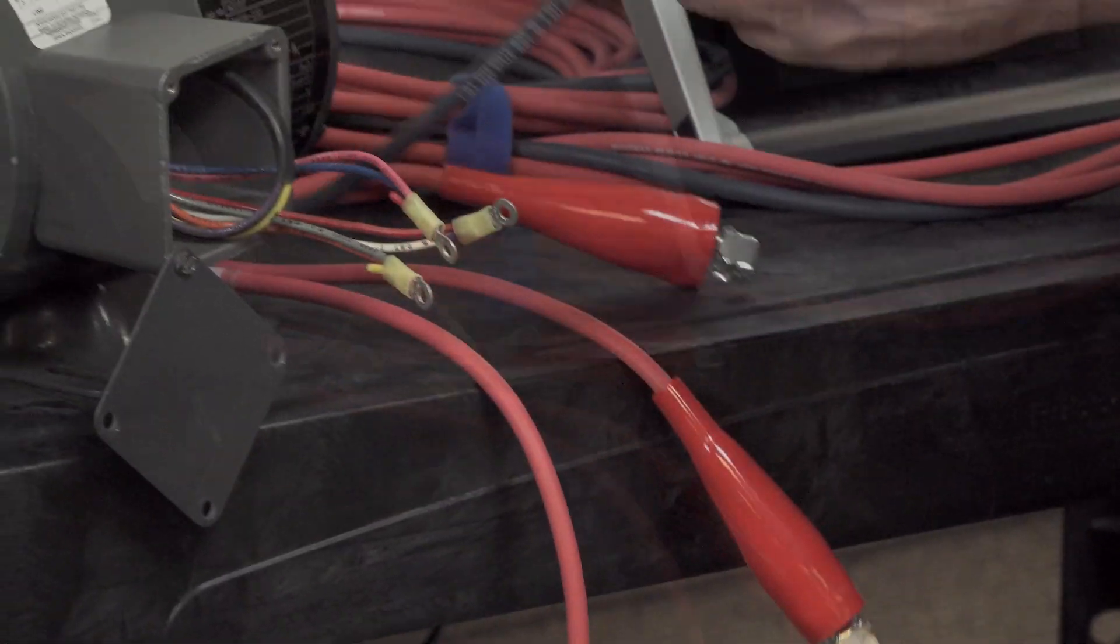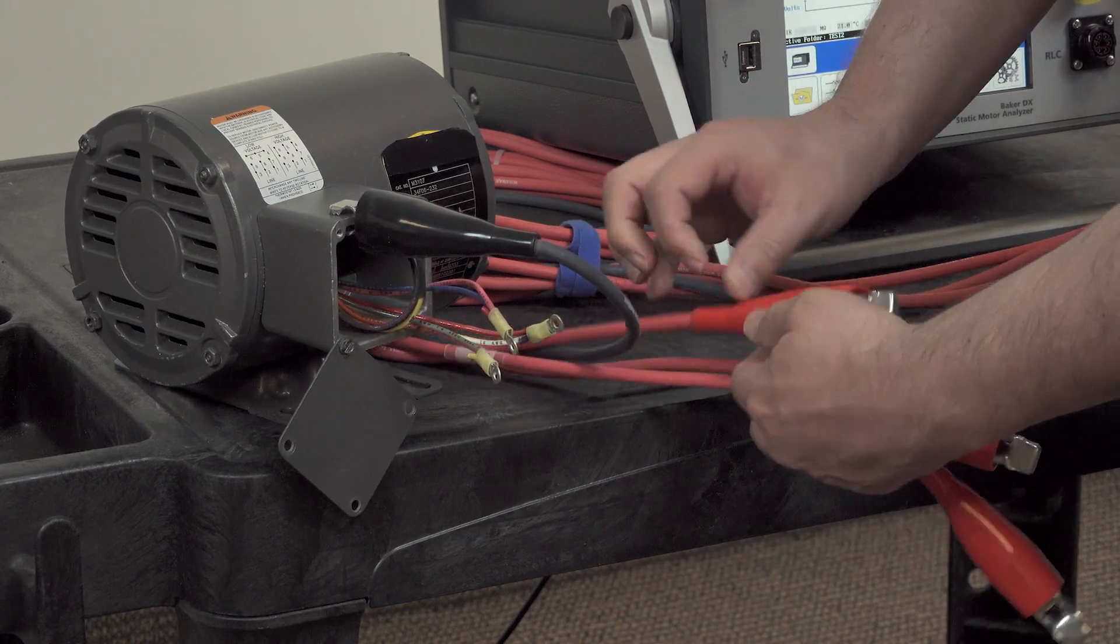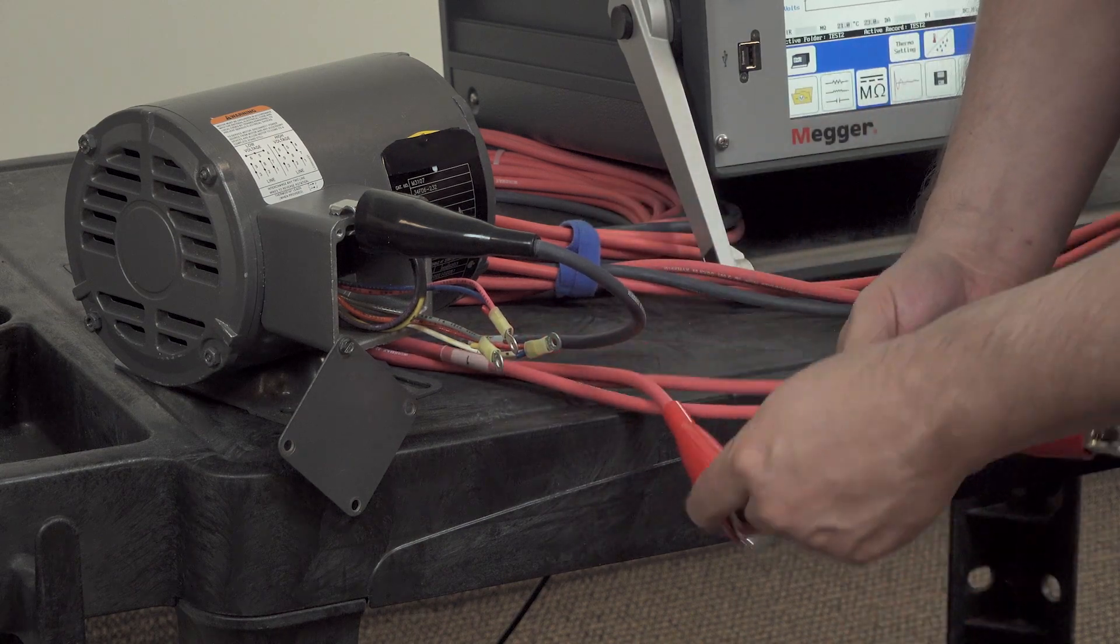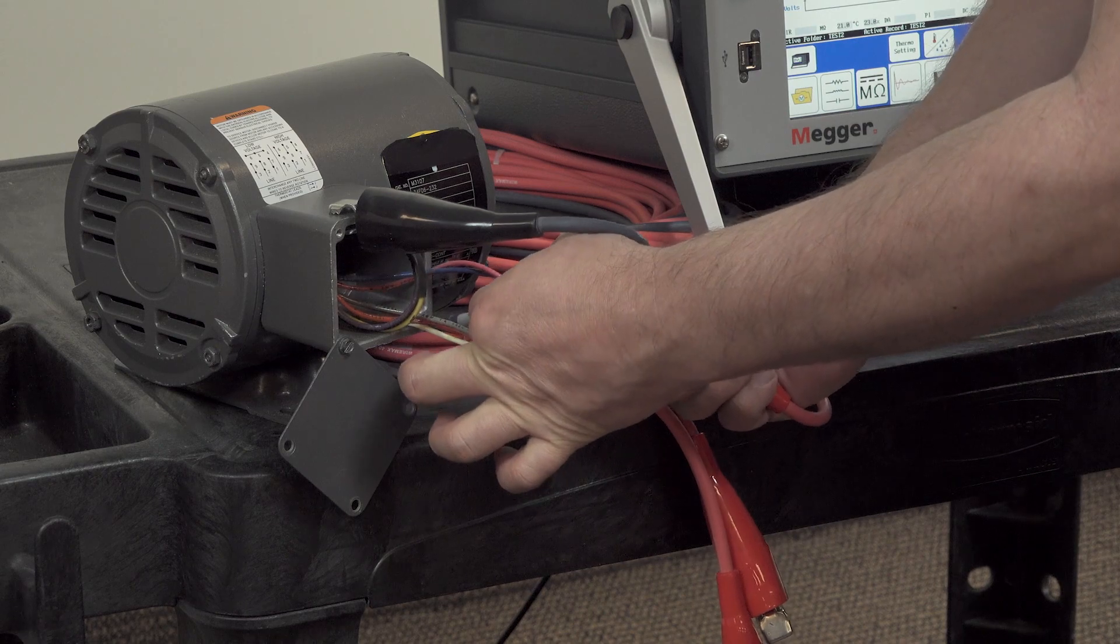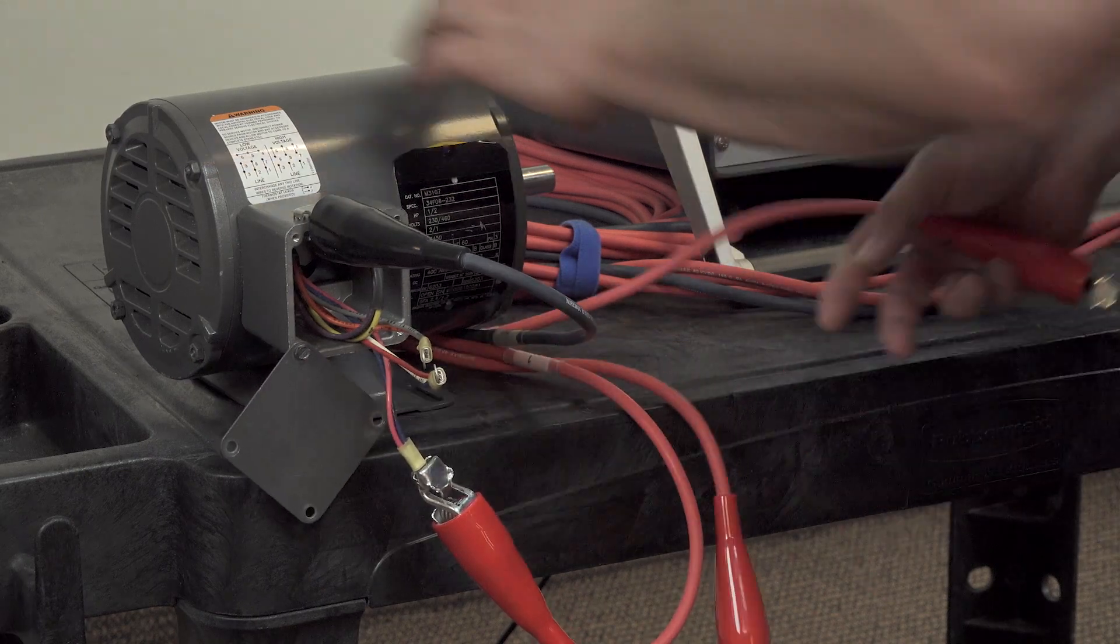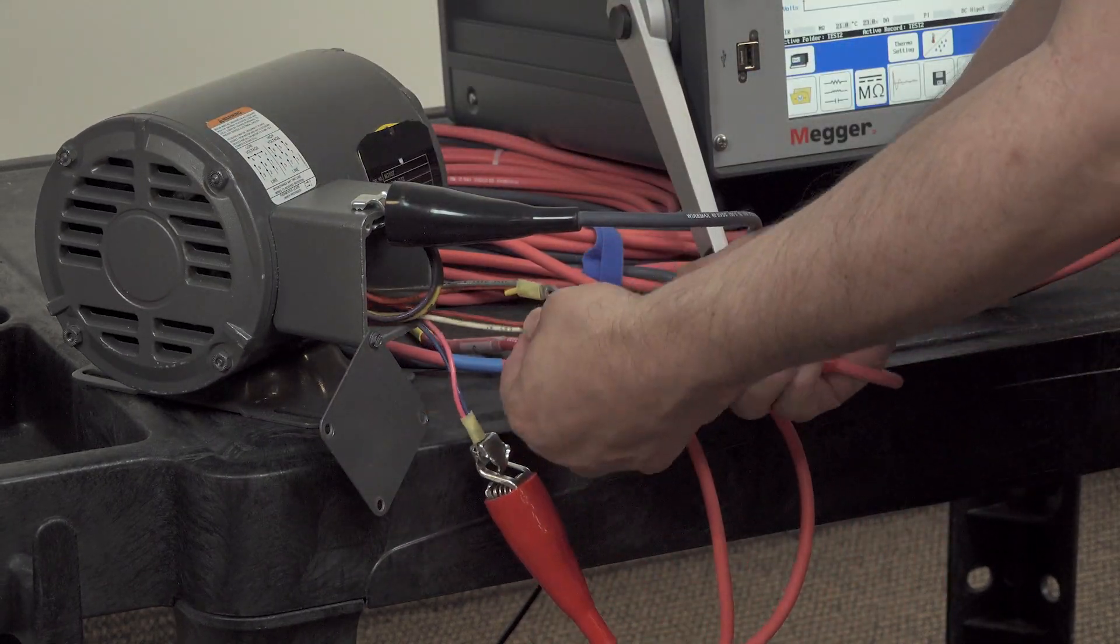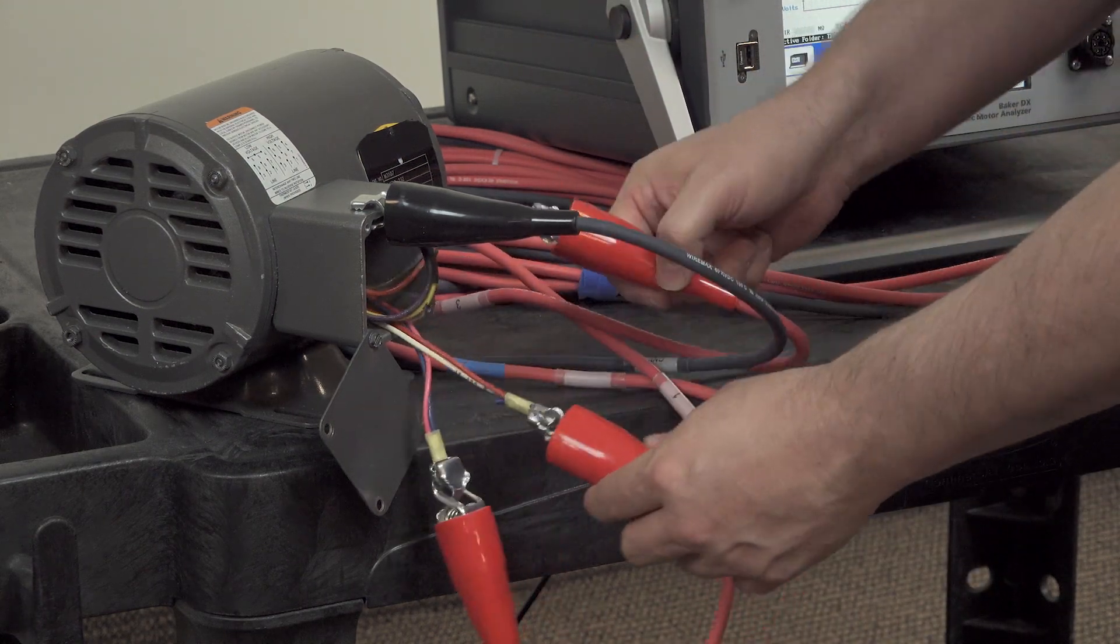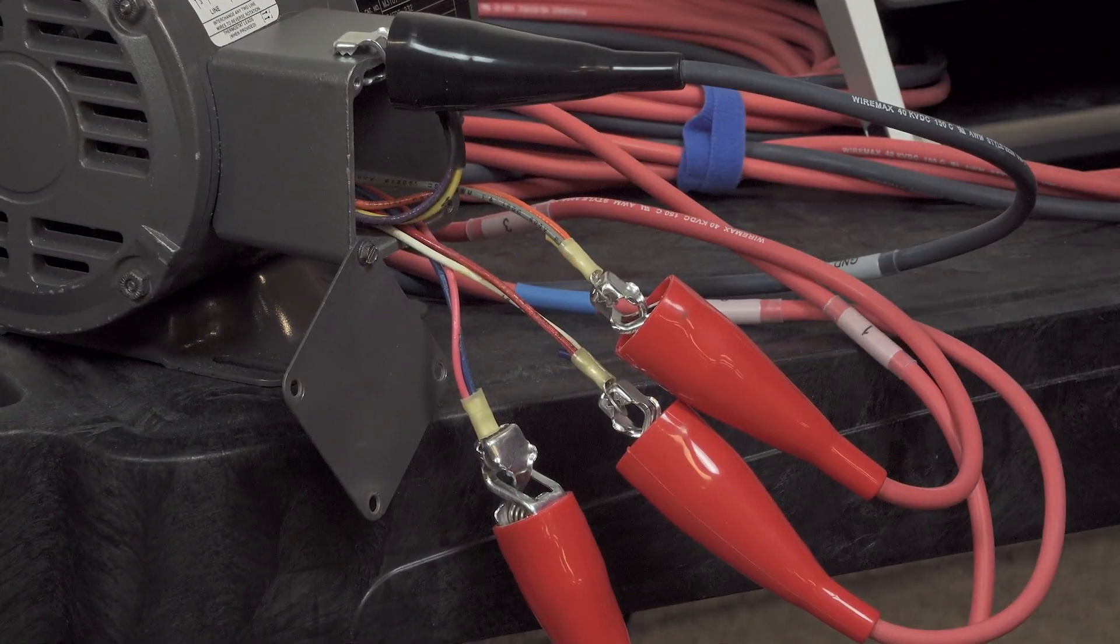Now we'll connect the leads to the motor. We'll connect the ground lead first to the motor frame, and then we have leads one, two, and three. We want to connect them to the appropriate motor leads, ensuring that the leads are not touching and that they're away from any ground sources as well.